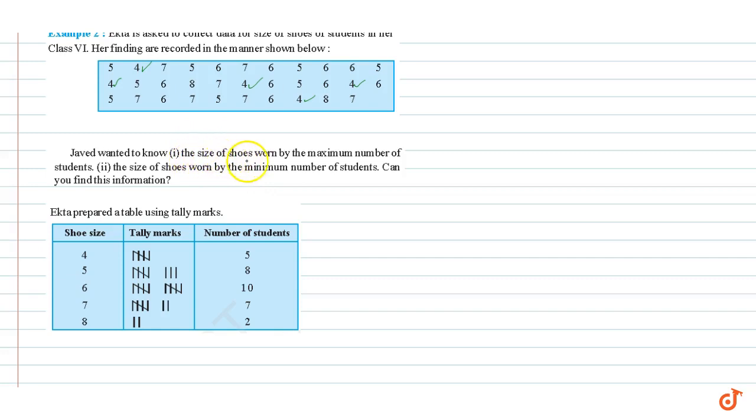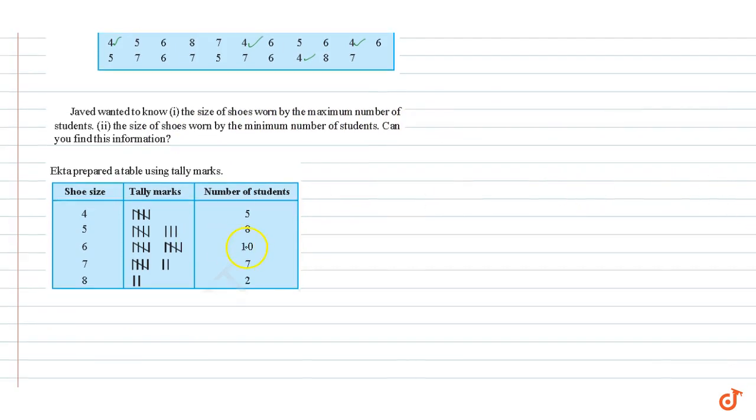Question 1: the size of shoes worn by the maximum number of students. It is the maximum number of students, so the size of the shoe is 6. So (1) the answer is 6. For (2), the size of shoes worn by the minimum number of students is 2, which is the minimum number of students, so the size of the shoe is 8. So the answer is 8. These are our answers.